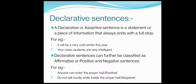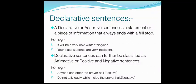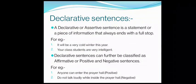First, let us talk about declarative sentences. The other name of a declarative sentence is also assertive sentence — don't get confused between the two. A declarative or assertive sentence is a statement or a piece of information that always ends with a full stop. The sentence which is giving information is known as a declarative or assertive sentence. For example: 'It will be a very cold winter this year.' This sentence gives information and ends with a full stop, so it is a declarative sentence.